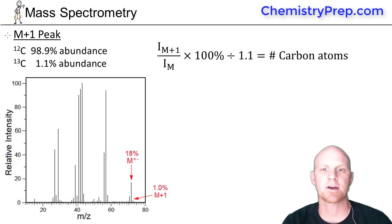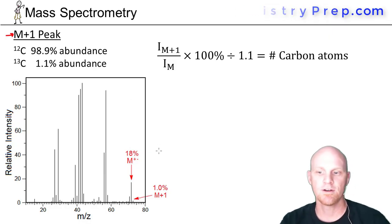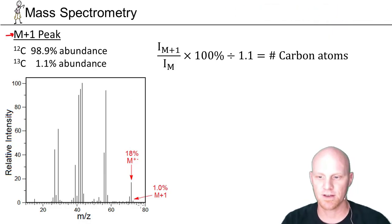Other useful information that can be gleaned from a mass spectrum is due to what we call the M+1 peak. So if you find your parent peak, and ours in this compound showing up right here at a mass of 72, everything relative to 72 is what we define, like our M-29. In this case, M+1 would be the peak showing up at 73.